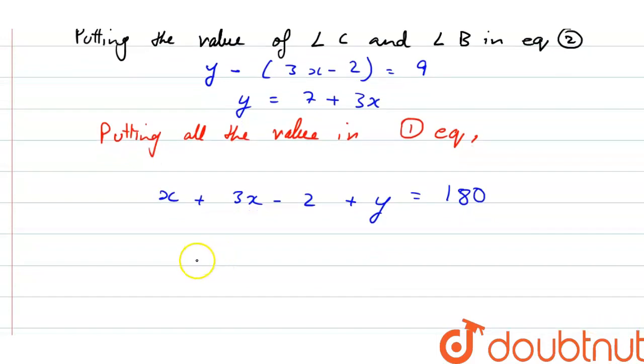Now putting value of y, then we will get x plus 3x minus 2 plus 7 plus 3x. That is equals to 180 degrees.